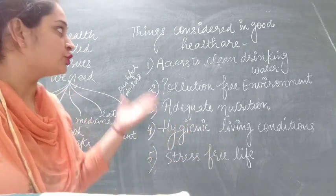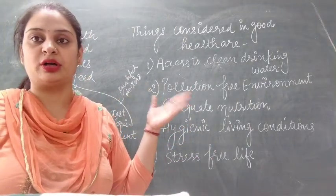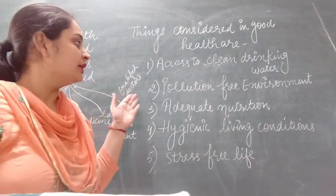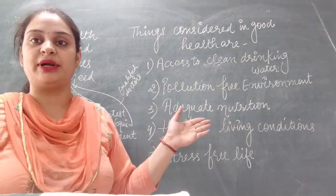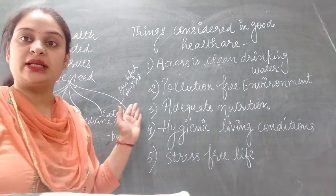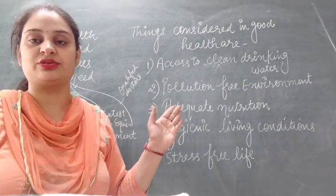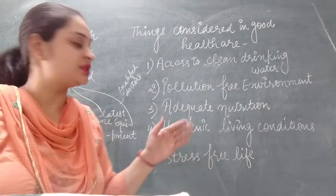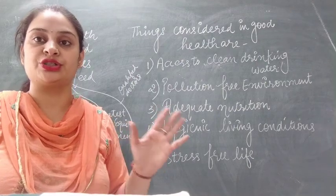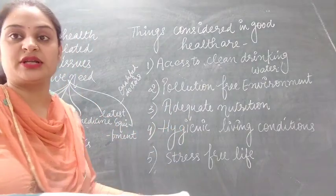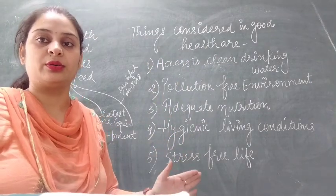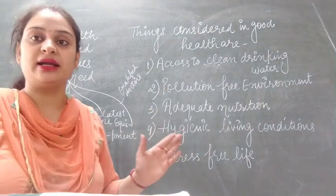When we talk about good health, these things should be considered. The first one is access to clean drinking water. Number second, a pollution-free environment — if our environment is pollution-free, then our health will not be affected. The third one is adequate nutrition; we must have a balanced diet so that we do not face any health-related problems. The fourth one is hygienic living conditions — the area in which we all live should be hygienic. And the fifth one is a stress-free life. All these components affect our health a lot.